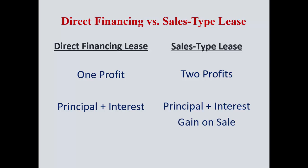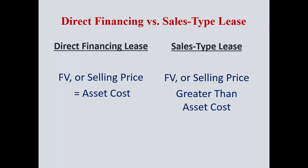On a sales type lease, it's different. This is where the landlord purchases an asset and turns around and leases it for more than they paid for it. So not only do they have a return of principal and interest over the life of the lease, they also get a gain on the sale. With a direct finance lease, fair market value equals the original asset cost — no additional profit besides principal and interest. With a sales type lease, the fair value is set greater than what the landlord originally paid, so there's an additional profit. That's why it's one profit versus two profits.